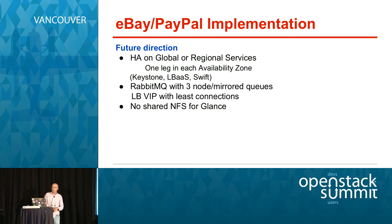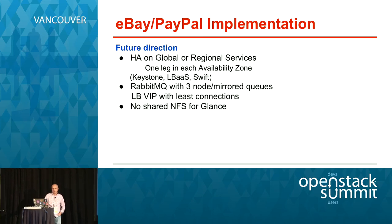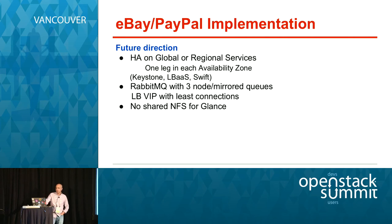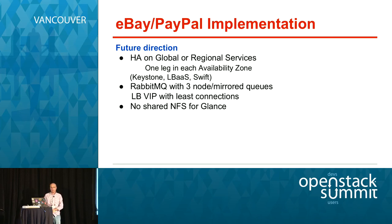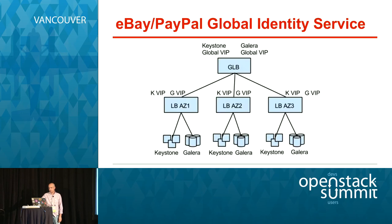The future direction for HA at eBay and PayPal is that we're trying to go to HA global regional services — one leg in each availability zone. So far we've been using that for Keystone, LBaaS, Swift, and it's working very well. We're also moving to three-node mirrored queues for RabbitMQ — we've already implemented that and so far so good. We've been using shared NFS for Glance and are replacing it with a Swift cluster. We have two global VIPs — one for Keystone and one for Galera — and the global load balancer is backed into three AZ load balancer VIPs, each with a VIP for Keystone and a VIP for Galera behind clusters of control nodes.